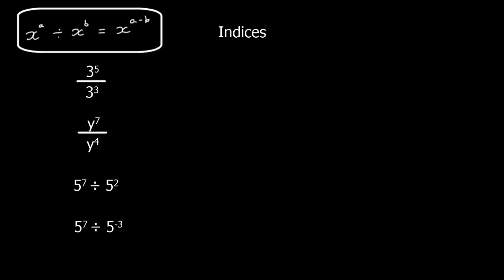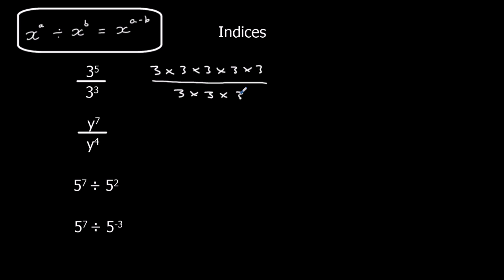The second rule: when we divide, we subtract the powers. Let me explain why. We've got 3 to the power of 5, which means 3 times 3 times 3 times 3 times 3, divided by 3 cubed. What we can essentially do is cancel off three of the 3s, and that leaves us with 3 squared. 5 take away 3 is 2.